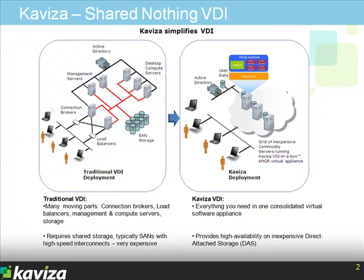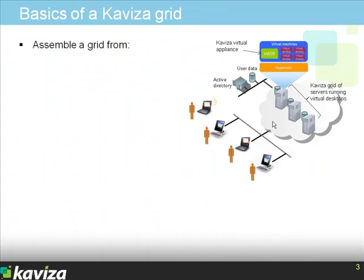With Kaviza, you do not need separate management servers or connection brokers, an expensive shared storage pool, or specialized high-speed interconnects. You create a grid from inexpensive off-the-shelf servers and Kaviza dynamically provisions and manages virtual desktops across this grid — for instance, Dell PowerEdge machines, IBM X-series, or HP ProLiant servers.